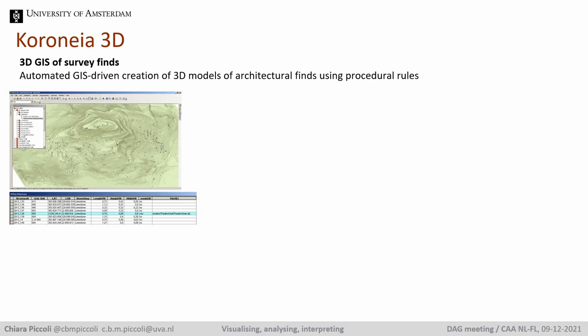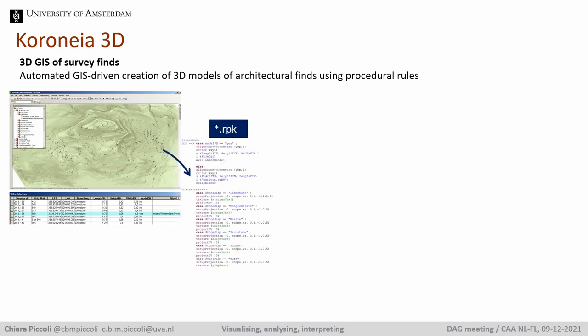The first thing I'm going to show is the creation of a 3D GIS of the survey finds. The starting point were the GPS points recording architectural finds on the hill. The attribute table of the shapefile contained information about measurements, the type of stone, and whether a more detailed 3D model existed. I wrote a short CGA rule that retrieves this information and substitutes the points with blocks scaled according to dimensions in the shapefile and textured according to stone type, using the features from CityEngine rule in the ArcGIS 3D Analyst toolbox.